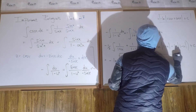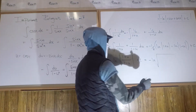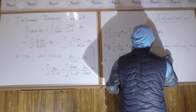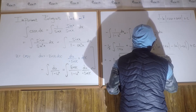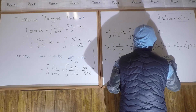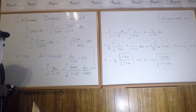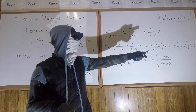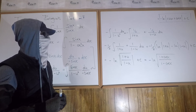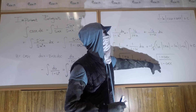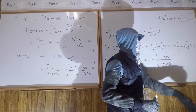It's negative ln of the square root of (1 plus cos x) over (1 minus cos x), plus C. To show this matches the first answer, we multiply 1 minus cos x by 1 plus cos x — and since I'm only allowed to multiply by 1, I have to multiply the numerator by 1 plus cos x as well.